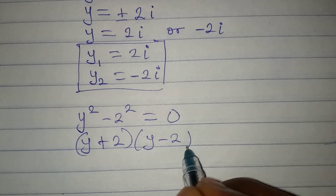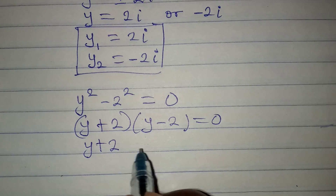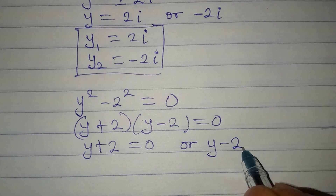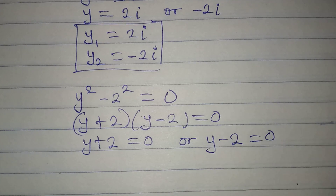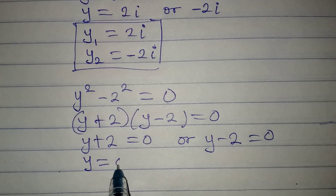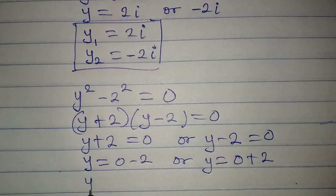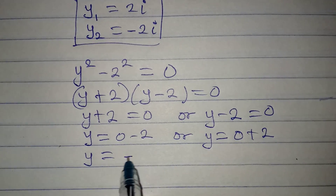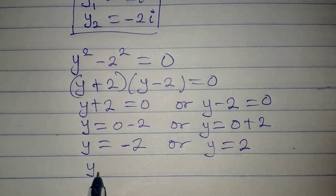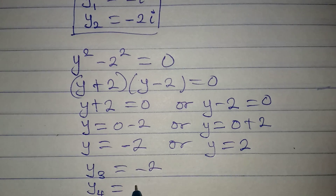So y plus 2 equals 0 or y minus 2 equals 0. From here, y equals 0 minus 2, which is negative 2, or y equals 0 plus 2, which is positive 2. So y3 equals −2 and y4 equals +2.